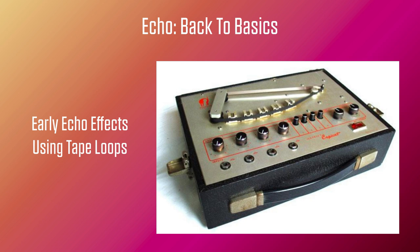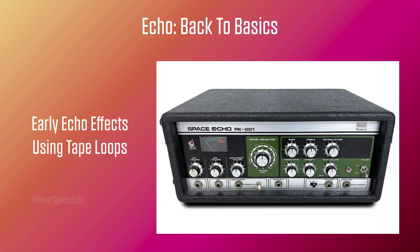In later years, the tape-based Roland Space Echo became very popular, combining tape loop echo with spring reverb. The main problem with any tape echo is that the tape loop wears out fairly quickly, and as it does so, the delays become less bright sounding. There's also a tendency for the rubber rollers to get misshapen with use, which introduces some unintentional pitch modulation.